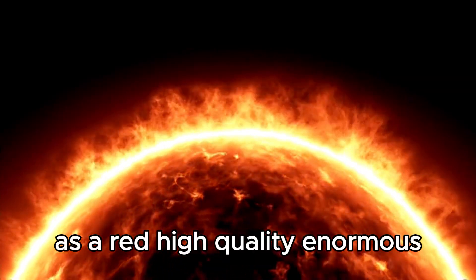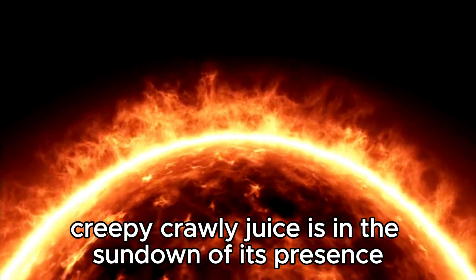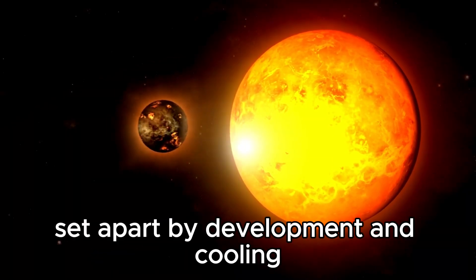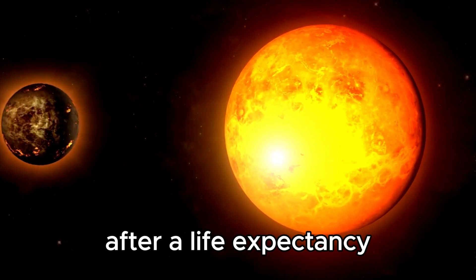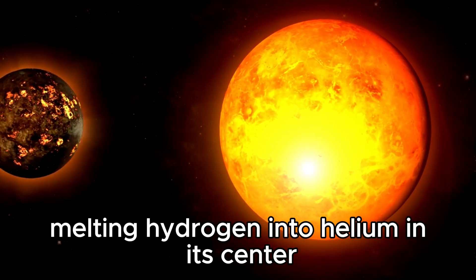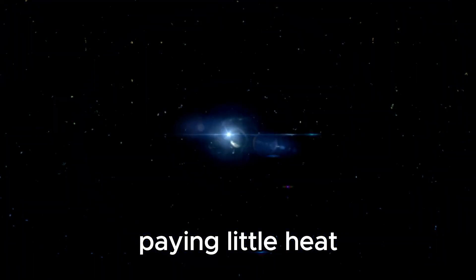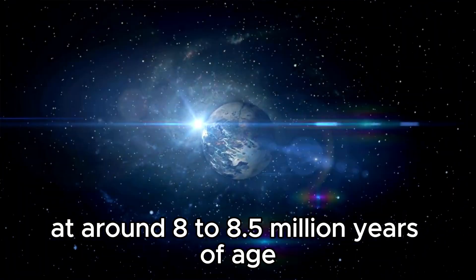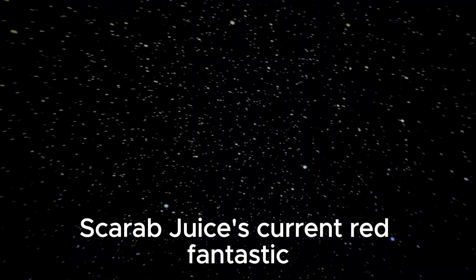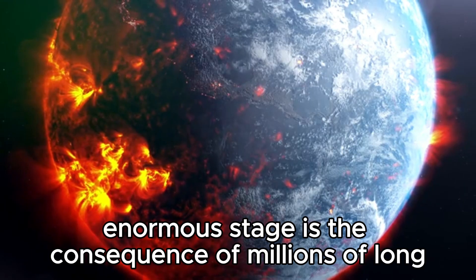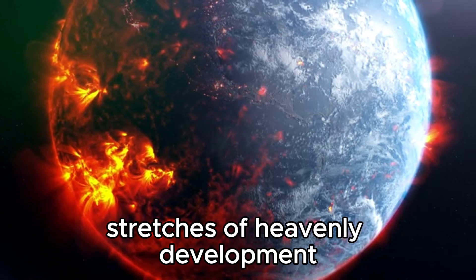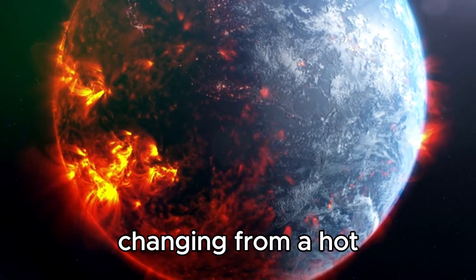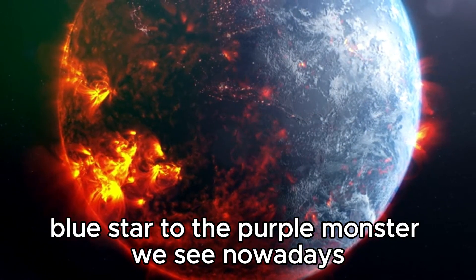As a red supergiant, Betelgeuse is in the sundown of its presence, set apart by expansion and cooling after a lifetime fusing hydrogen into helium in its core. Despite being incredibly younger in human terms at around 8 to 8.5 million years old, Betelgeuse's current red supergiant stage is the consequence of millions of years of stellar development, changing from a hot blue star to the purple monster we see nowadays.